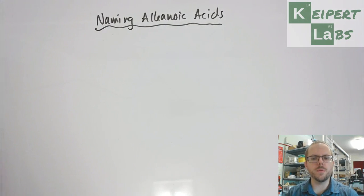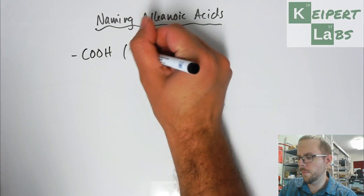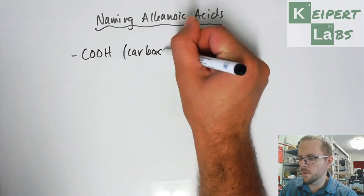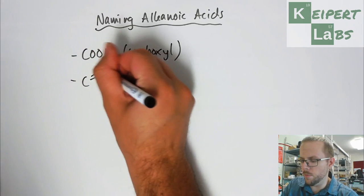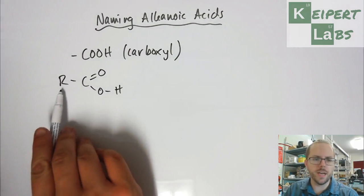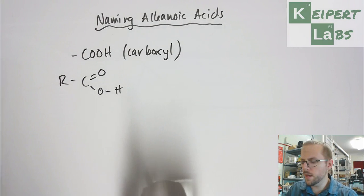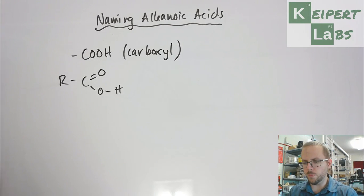In the previous video, we met this family of hydrocarbons which contain the carboxyl COOH group, which looks like this if we draw it out more exactly, where it's attached to some other group, whether it's a hydrogen or a carbon chain of some length. We looked at comparing them with alkanols and their properties.